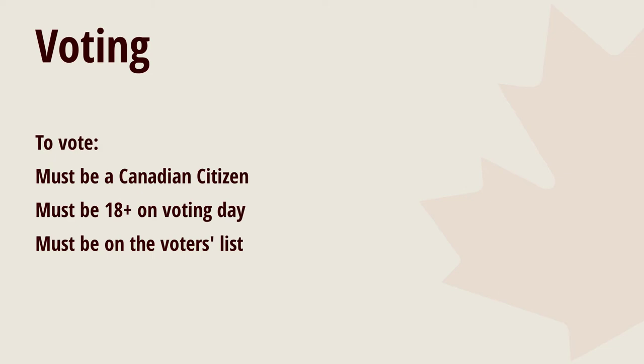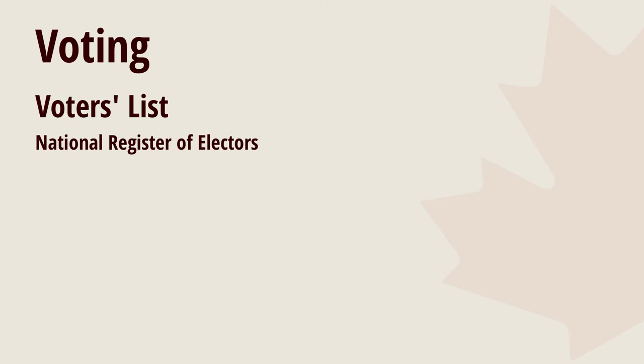The voters list is used for federal elections and referendums, and is made by an agency called the National Register of Electors. It is part of a bigger non-political agency called Elections Canada. This is a permanent database of Canadian citizens who are 18 and older and are qualified to vote.